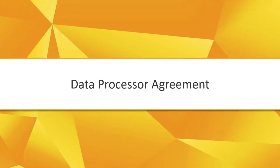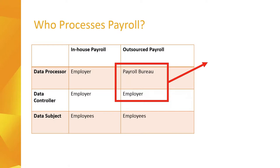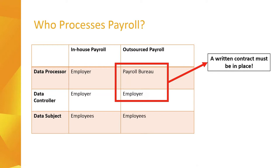GDPR places increased responsibilities on all parties that process personal data. Where a business processes their own payroll in-house, they are both the data controller and the data processor. Where a business outsources payroll to an accountant or payroll bureau, the bureau is the data processor and the employer is the data controller. The payroll data processor can lawfully process data on behalf of a client as long as there is a written contract between the payroll bureau and the client. Data processors must only process data per the written instruction of the client, so it is of the utmost importance that a comprehensive contract is in place.